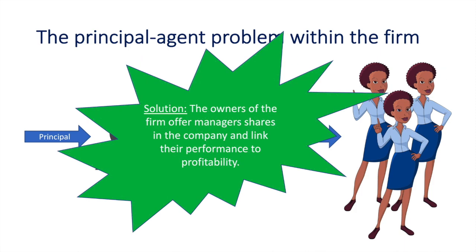One possible solution to this problem is to compensate managers with shares as part of their compensation package. The owners could also link their performance to the profitability of the firm. Is this guaranteed to work? No. However, this is a step in the right direction towards resolving the principal-agent problem.